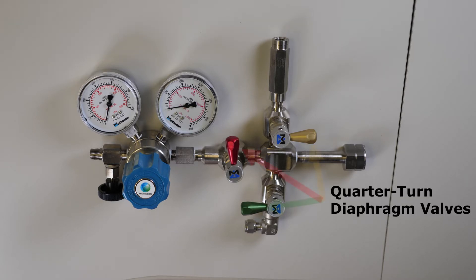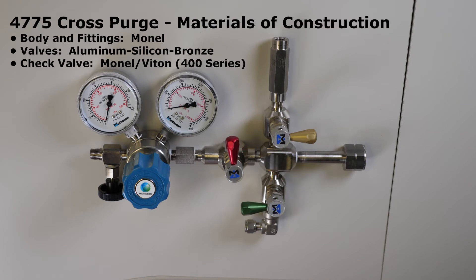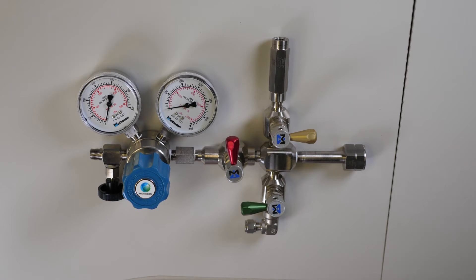The cross purge has quarter turn diaphragm valves which allow for quick activation and provide positive visual ID of open or closed status. The color coded handles also serve as a visual aid in process control.